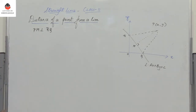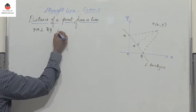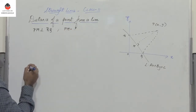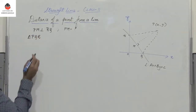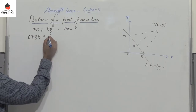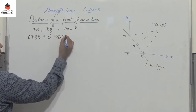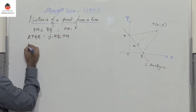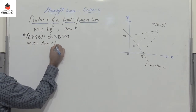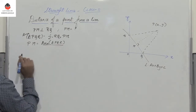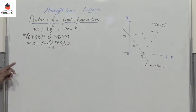We need to find the perpendicular distance PM. The distance of point P from the line is the perpendicular distance PM. Using the area of triangle PQR: area = ½ × base RQ × height PM, so PM = (2 × area of triangle PQR) / RQ.